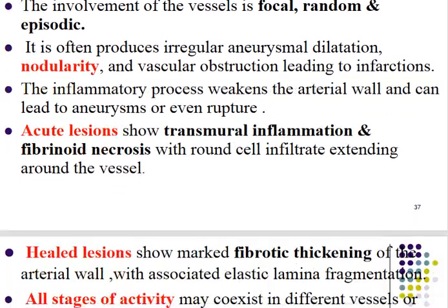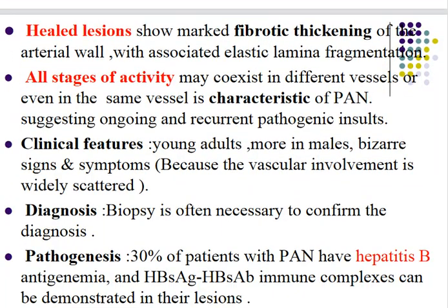The healed lesion of polyarteritis nodosa shows marked fibrotic thickening of the arterial wall associated with elastic lamina fragmentation. A key characteristic feature is that all stages of activity — both acute and healed lesions — may co-exist in different vessels or even in the same vessel, suggesting an ongoing and recurrent pathogenesis.